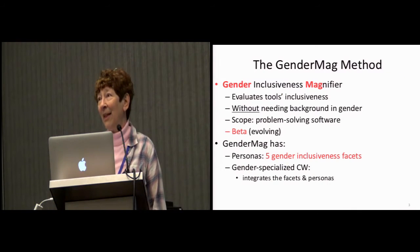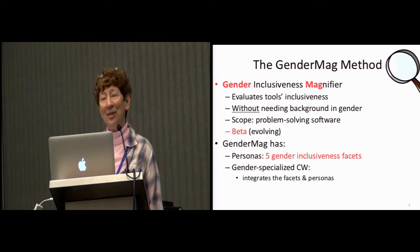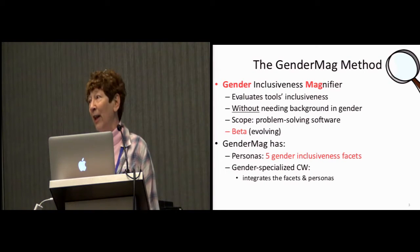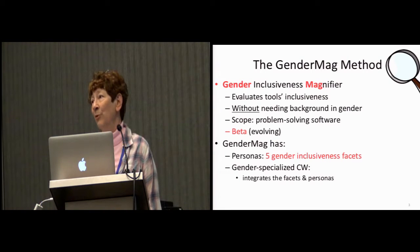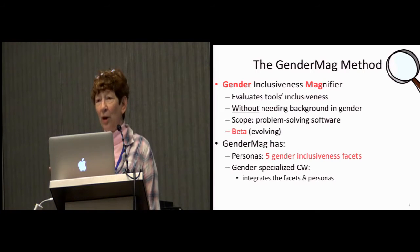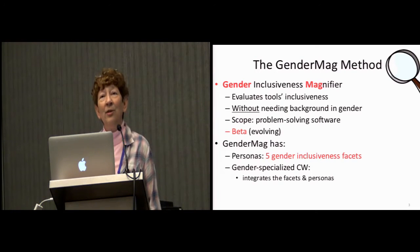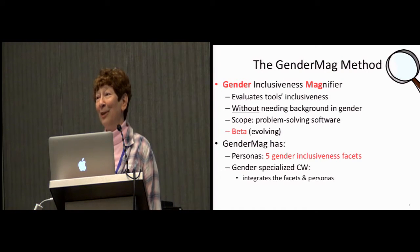So what's GenderMag? It's a method — it stands for Gender Inclusiveness Magnifier. There's a little magnifying glass right there to help you remember that. Its purpose is to evaluate tools' inclusiveness by people who don't have any background in gender differences or even necessarily in any kind of UX work, so even software developers are able to use it. The scope that GenderMag helps you address is when the software is intended for some form of problem solving — imagine a user trying to solve a problem and coming to the computer to work on it.